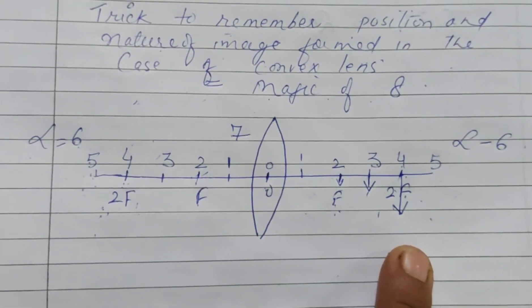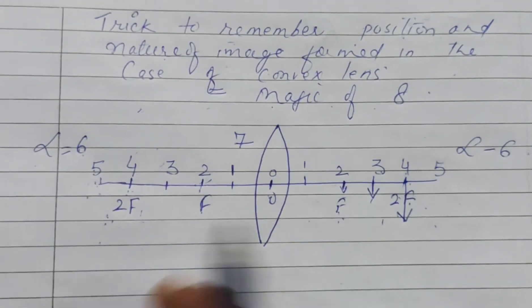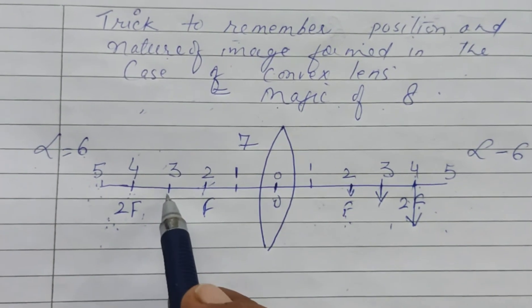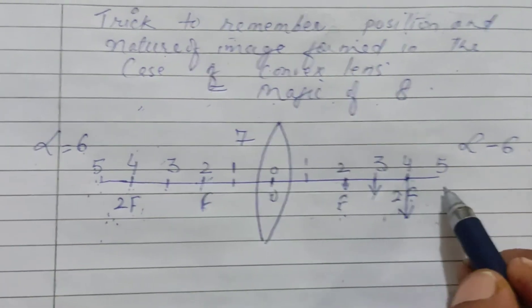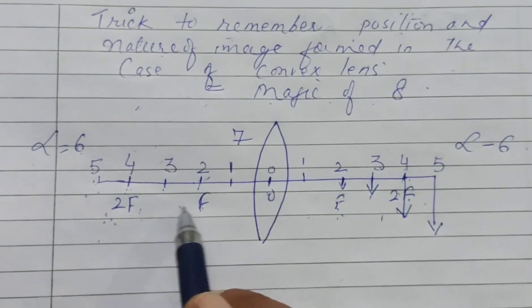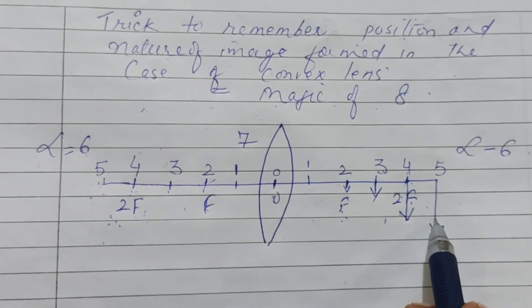Now you come to point 3—that is between 2f and f. So here will be 5, beyond 2f, and it will be magnified.